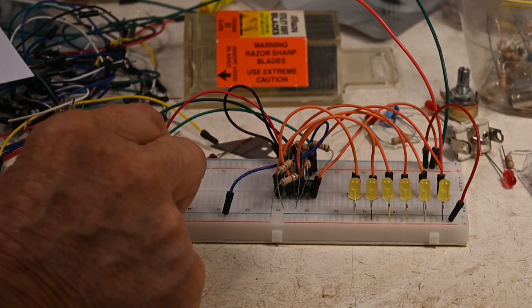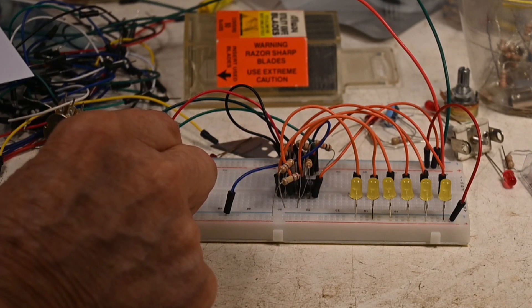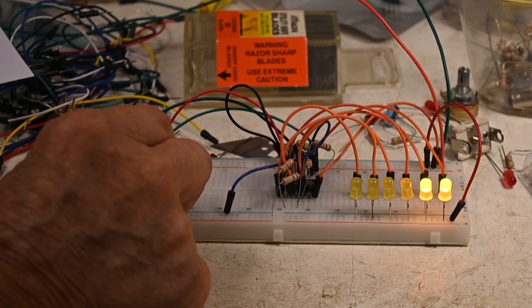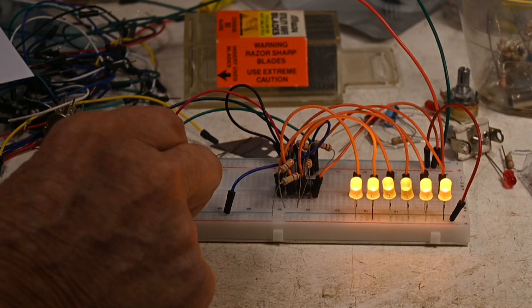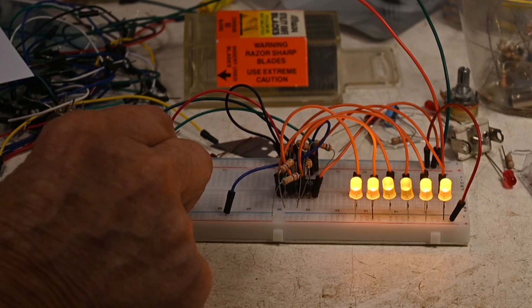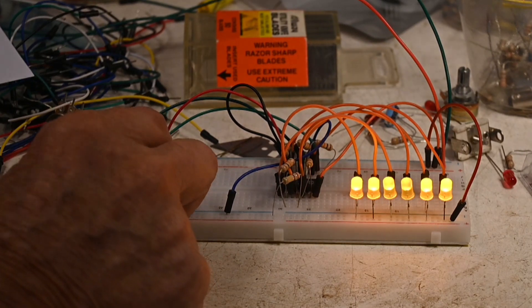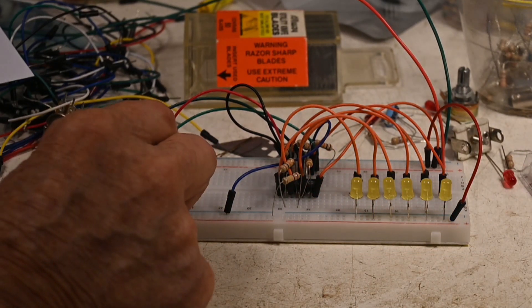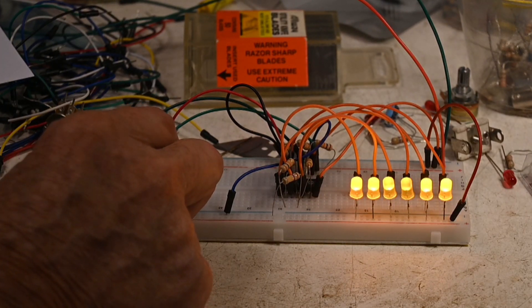6, and I'll do that again very slowly. That's 6, and that's 5, and what I'm doing is varying the voltage on the resistor bridge.